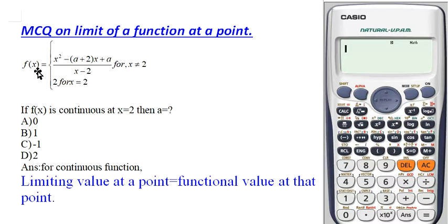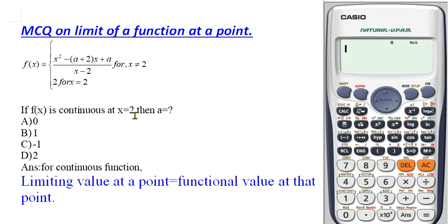Please watch this video till the end. The question gives a piecewise function f(x) defined in two pieces. We are given that f(x) is continuous at x = 2, and we have to find out the value of the unknown 'a'. Remember one very important point: in the continuity of a function, the limiting value at a point should be equal to the functional value at that point.